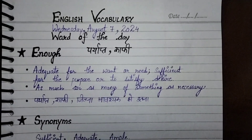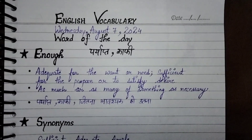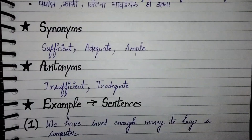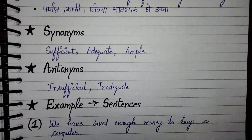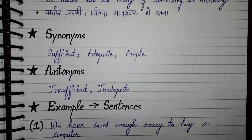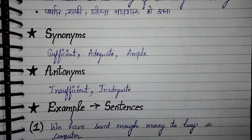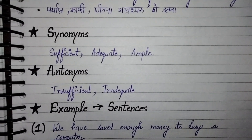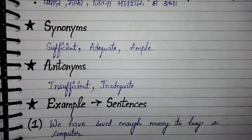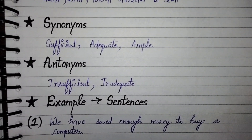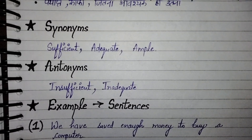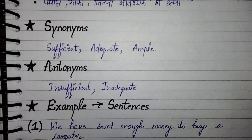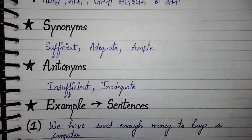So enough ka meaning hota hai kaafi, paryaapt. Synonyms of enough are sufficient, adequate, and ample. Antonyms of enough are insufficient and inadequate.